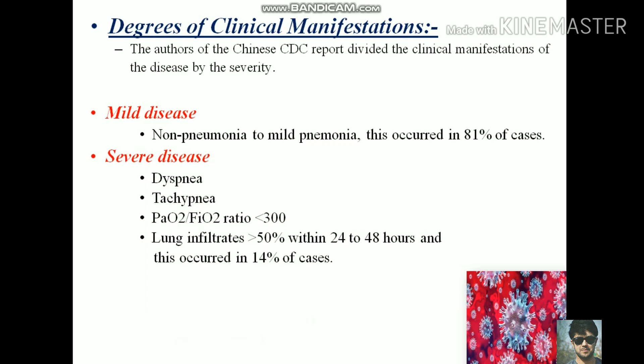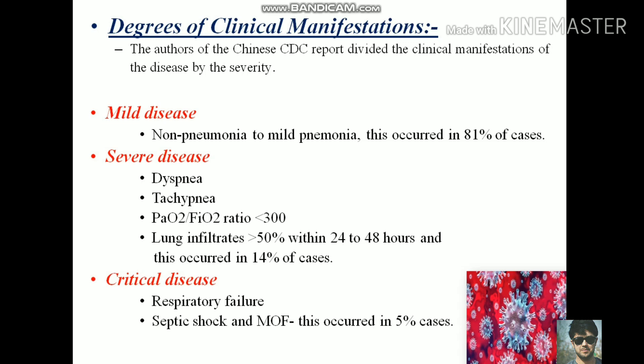Severe disease is characterized by dyspnea, increased respiratory frequency, blood oxygen saturation less than 93 percent, partial pressure of oxygen to fraction of inspired oxygen ratio less than 300, and lung infiltration more than 50 percent within 24 to 48 hours — this occurs in 14 percent of cases. Critical disease involves respiratory failure, septic shock, and multiple organ dysfunction, occurring in 5 percent of cases.